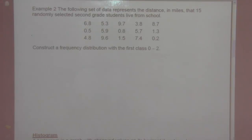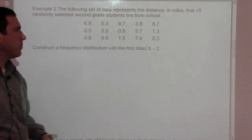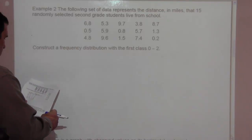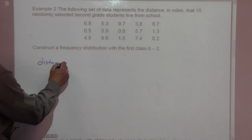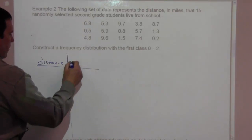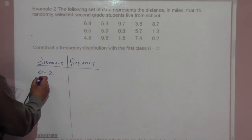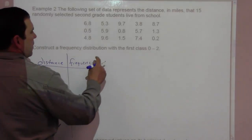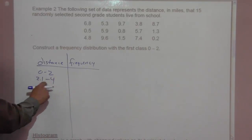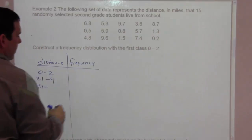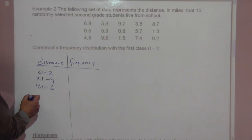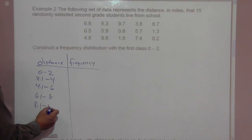Example two. The following set of data represents the distance in miles that fifteen randomly selected second grade students live from school. We can start the frequency distribution with the first class being zero to two. We have distance and then we have frequency. We have zero to two miles, then it must be two point one to four miles. You wouldn't just say three to four, or three to five, because you're missing the people who are more than two miles. Then four point one, and I go one decimal place because this data only goes to one decimal place. Four point one to six miles, six point one to eight miles, and eight point one to ten miles.